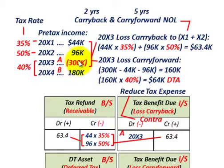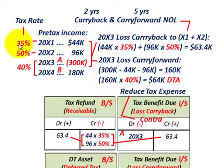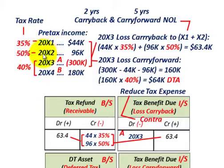Everything is in thousands of dollars. When calculating taxes and doing the carry backs and carry forwards, we also need to know our tax rate. The tax rate is 35% for 20x1, 50% for 20x2, and 40% for years 20x3 and 20x4.